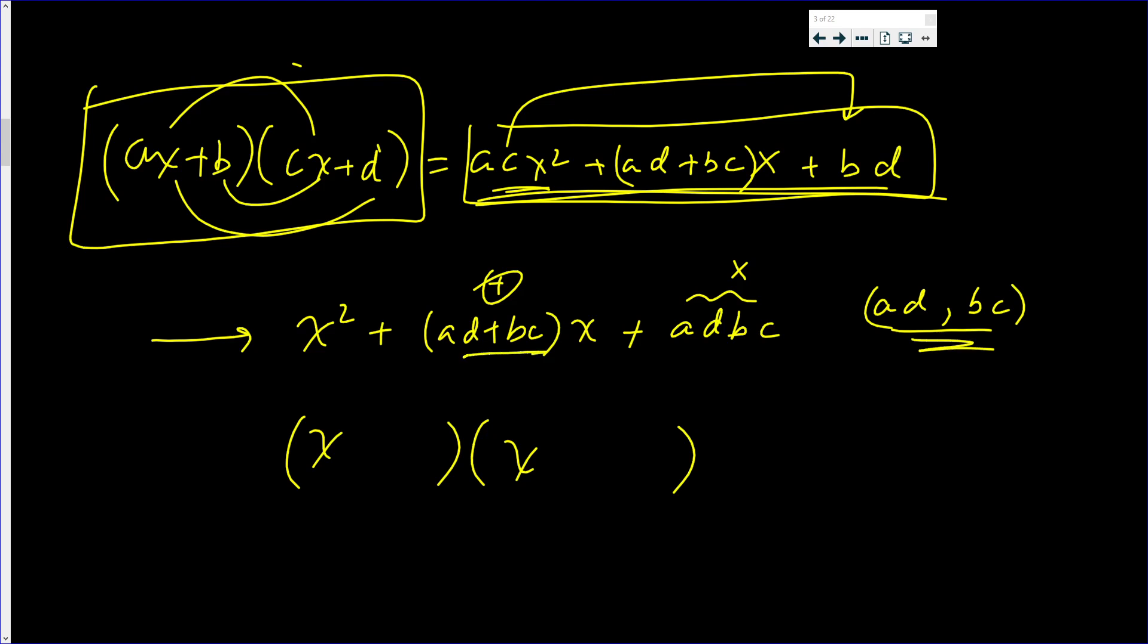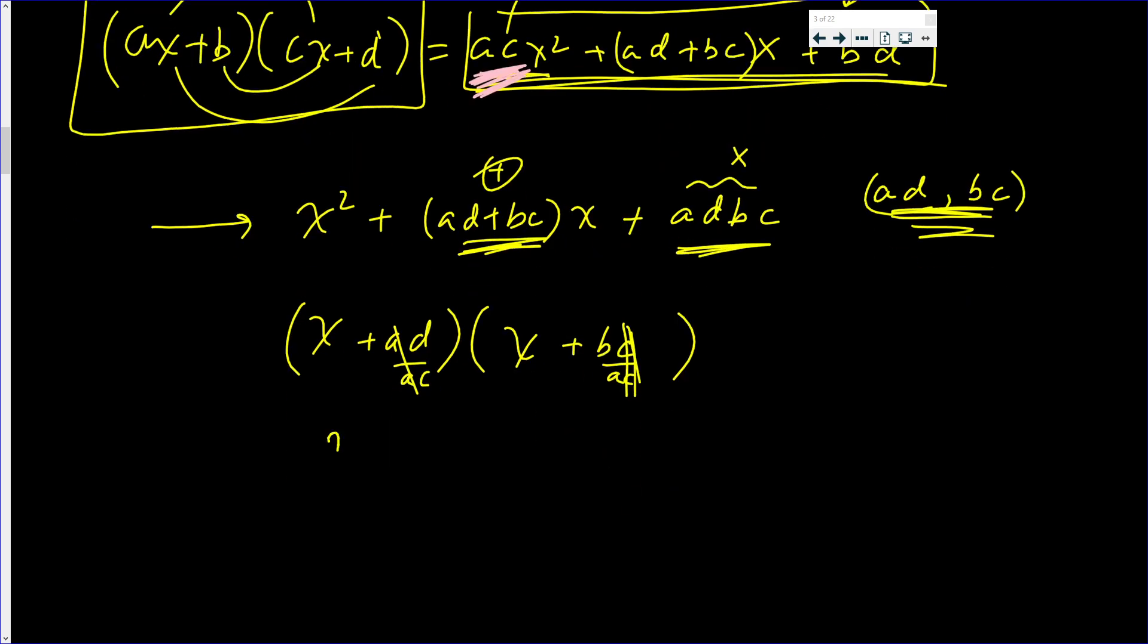So it's x + AD, x + BC. And then, I divide the constant by AC, the constants by A over C, A over C. The A's cancel here, the C's cancel there. So I have x + D/C times x + B/A.